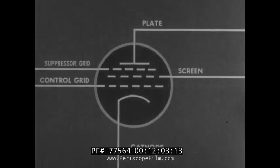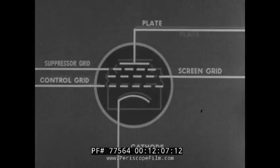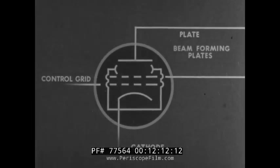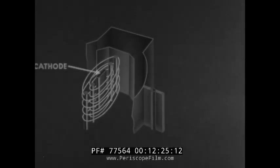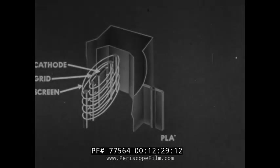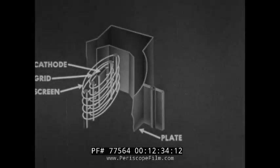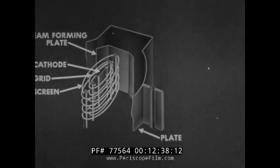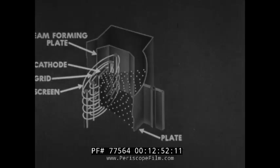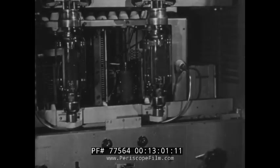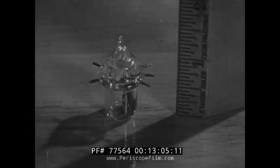The suppressor grid between the screen grid and the plate in the pentode may be omitted. Instead, what is known as beam forming plates are substituted. This is the symbol for the beam power output tube. This tube is built with the usual cathode, grid, screen, and plate. The beam forming plates are so placed as to direct the cathode-to-plate stream of electrons in a beam, carrying the secondary electrons back to the plate, thereby eliminating the necessity for a suppressor grid. Whether built into great power tubes or into the tiny peanut tube, the principles of the triode tube are basic.